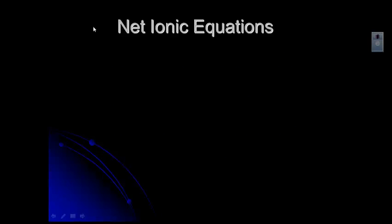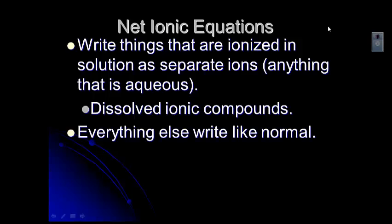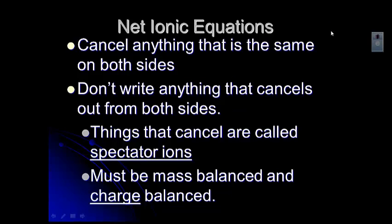So let's talk about what we do. We write what's called a net ionic equation. The net ionic equation just tells us exactly what we see in the reaction — it shows us the formation of that precipitate. It can happen with a double replacement like we just did, or with a single replacement. When we do a net ionic equation, we want to write the things that are ionized in solution as separate ions, so anything that has AQ as its symbol. Everything else we write like normal, and we don't write anything that cancels out from both sides. Anything that we cancel is called a spectator ion.